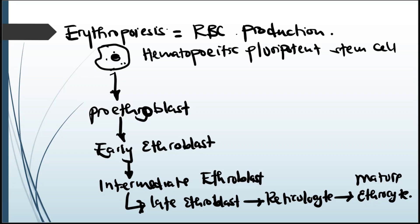What starts happening at the stage of the late erythroblast is that the nucleus disappears. So here, coming from the intermediate erythroblast to the late erythroblast, the nucleus disappears.